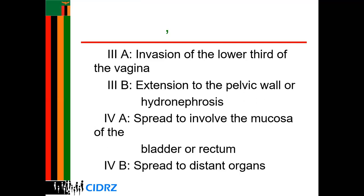In Stage 3, the disease has extended to the entire region and treatment becomes more difficult. In Stage 4A, the cancer spreads to involve the mucosa of the bladder and rectum, meaning the entire pelvic region and lower abdomen are affected. In Stage 4B, the cancer spreads to distant organs — this is the end stage, and treatment becomes severely difficult.